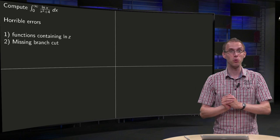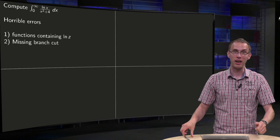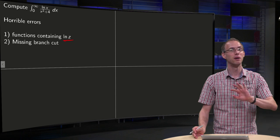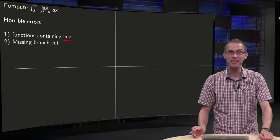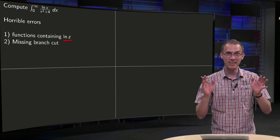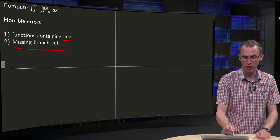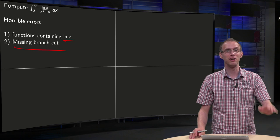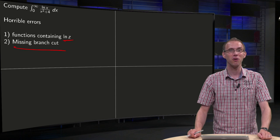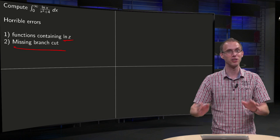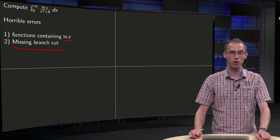Let's start out with two horrible errors. If you have some function somewhere containing the ln of z, please start all over again. That's one horrible error, never do that. And if you have nowhere a branch cut involved, you also did something completely wrong, because then there is something fundamentally going wrong. So please don't make those horrible errors.